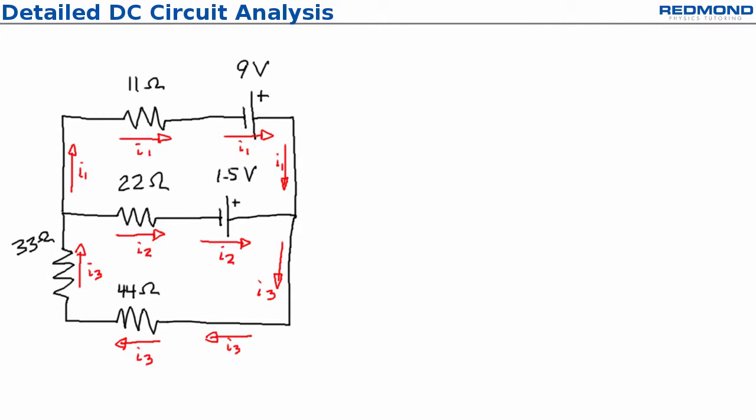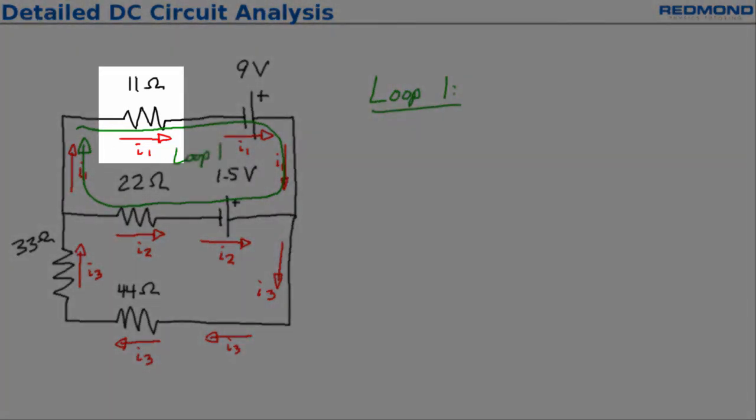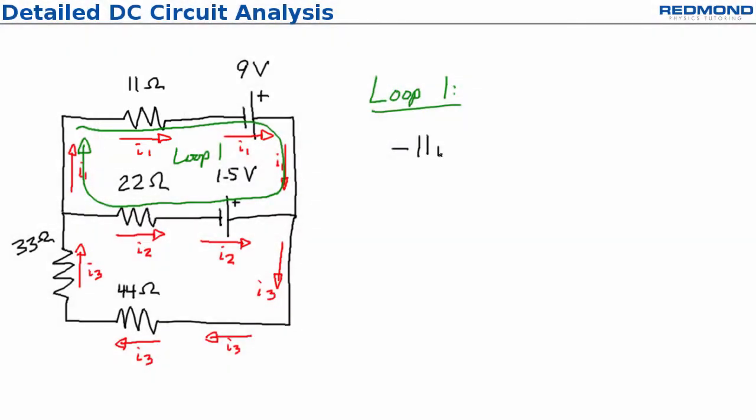I'll start my loop at the upper left and go clockwise through the 11 ohm resistor, the 9 volt EMF, then the 1.5 volt EMF and the 22 ohm resistor, and then I'm back to where I started so I can write the equation. The first element I encounter is the 11 ohm resistor and I'm going with the assumed current, so I add negative 11I1 to the equation. Recall that V equals IR for a resistor and we're adding voltages, also known as potential differences.